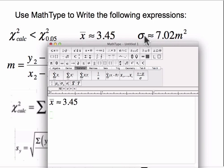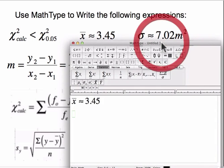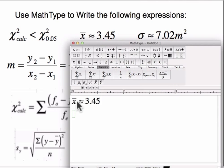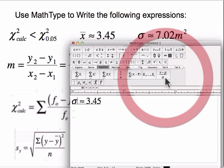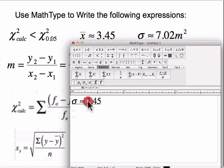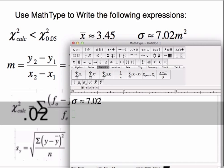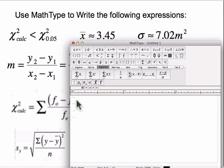Now I'm going to do this one here. The standard deviation is approximately 7.02. So I just need to get the sigma symbol from my Greek letters, and there it is. And then you can do 7.02 meters, and then again our superscript squared.